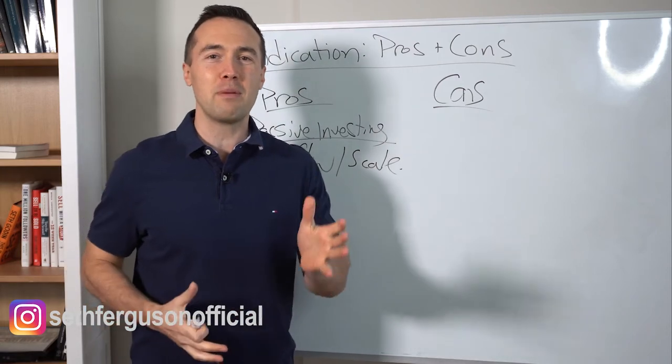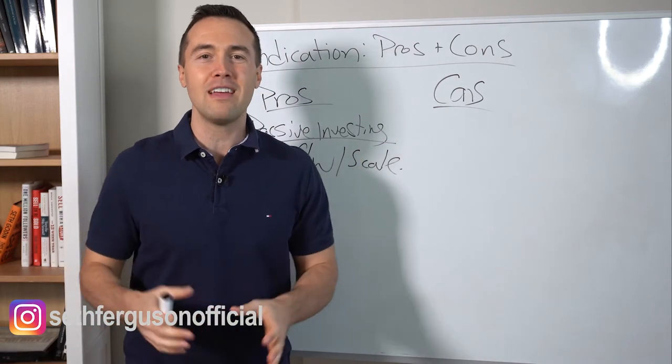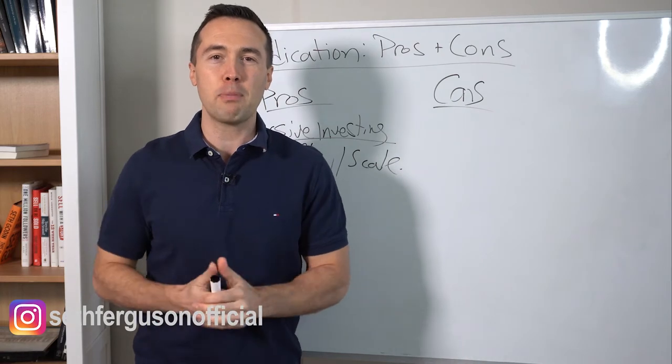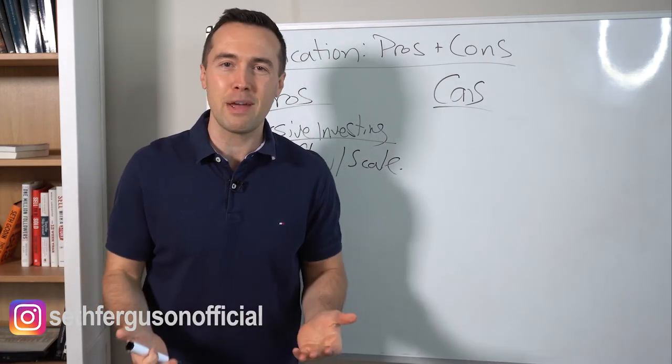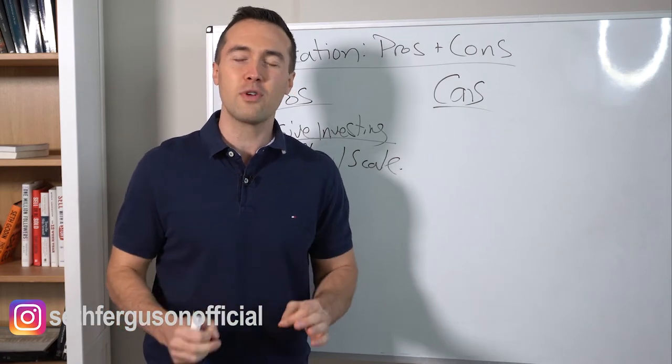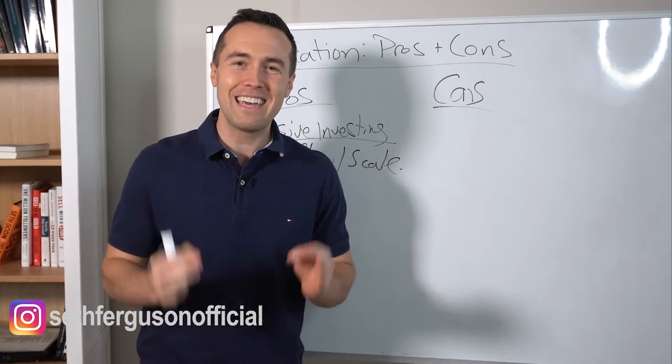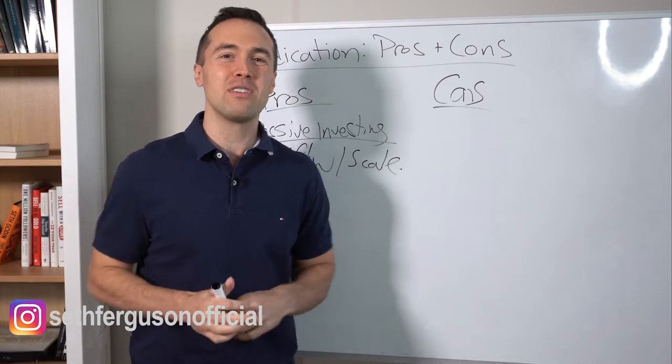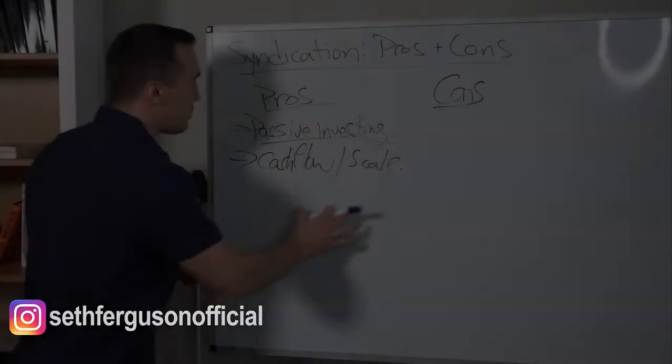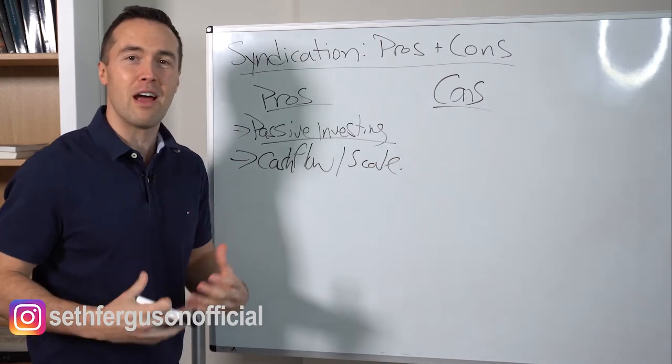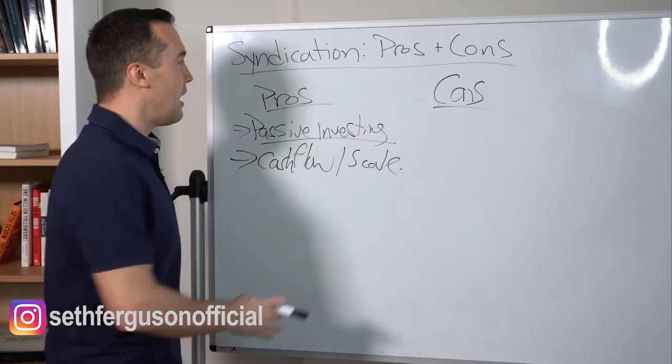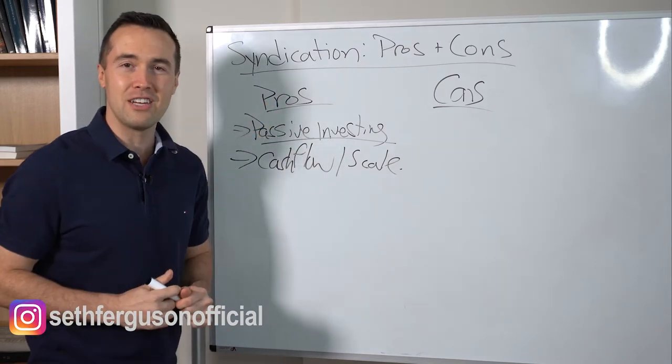So everybody in the syndication can take advantage of the added stability, the cash flow, the predictability, all those benefits. Your expense ratios are going to be between 40 and 50%, depending on the type of property you're investing in, as opposed to something much higher with a single family home or a duplex. So strong cash flow is key. It is the lifeblood of real estate investing.